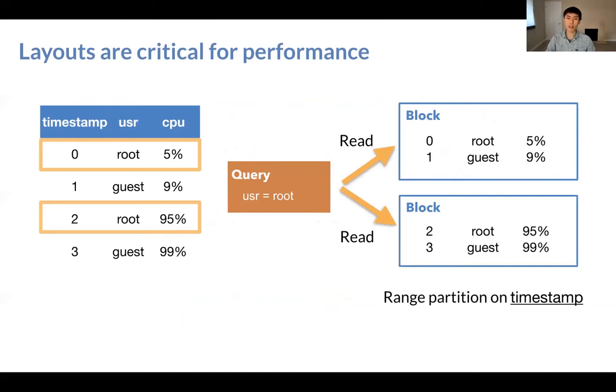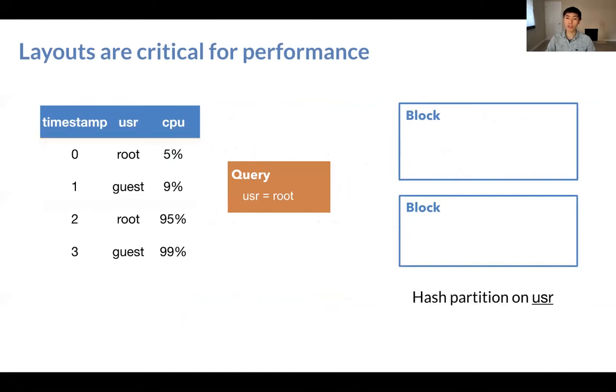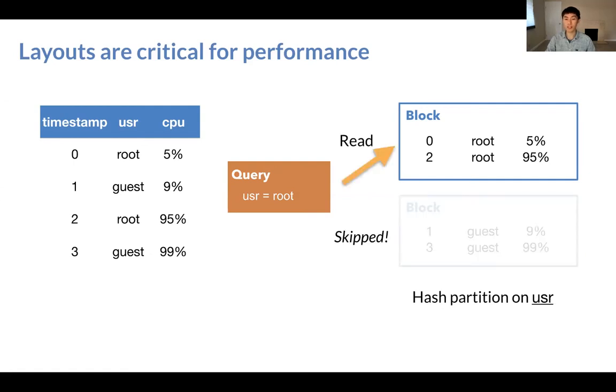How can we do better? Well, instead of range partitioning, we can hash partition on the user column, resulting in an alternative layout. So in this case, the query can safely skip the second block.